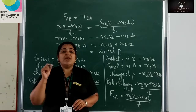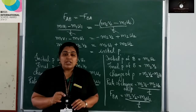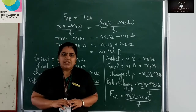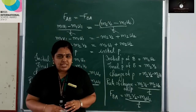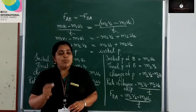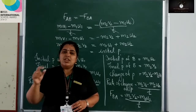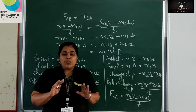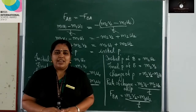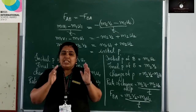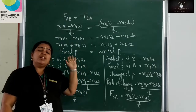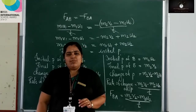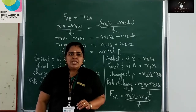In the absence of any external force, the total momentum of a system is constant. This is the law of conservation of momentum — the total momentum will be the same, meaning the momentum before collision is equal to the momentum after collision. Both will have the same value.